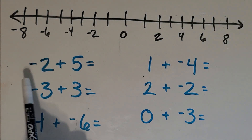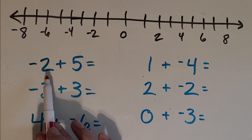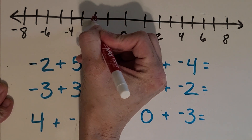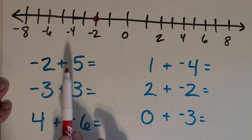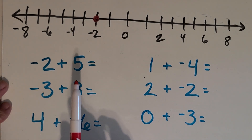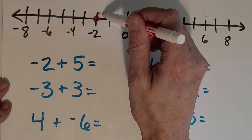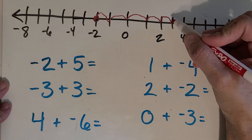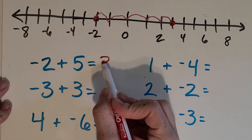Now we're going to try this first problem together. If we have negative two plus five, that means we want to start on the number line at negative two. Then I'm going to hop five jumps going this way on the number line — bigger on the number line. One, two, three, four, five. Where am I at? The answer is three.